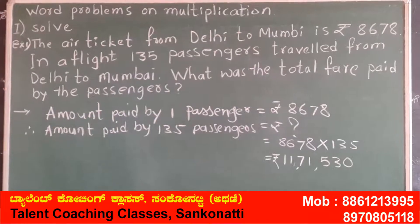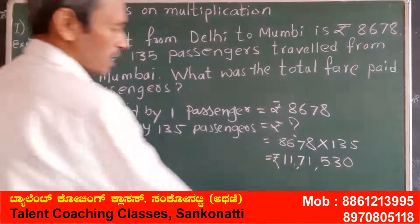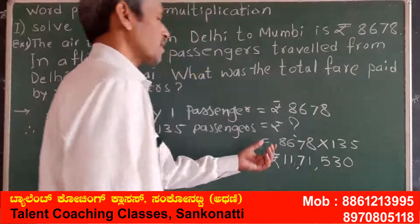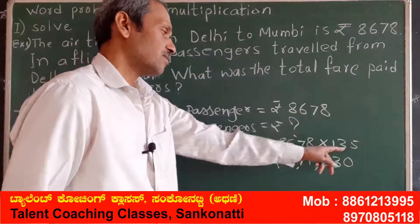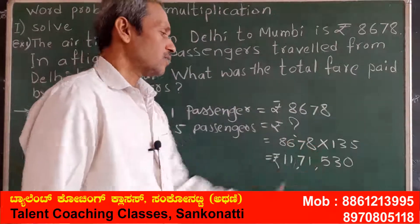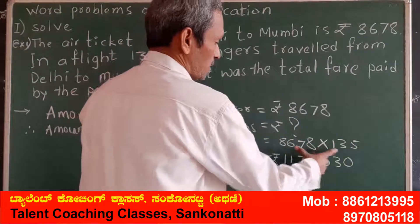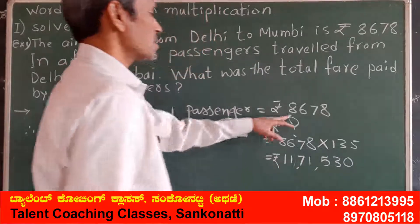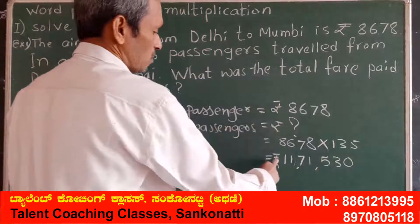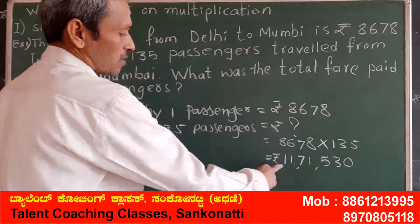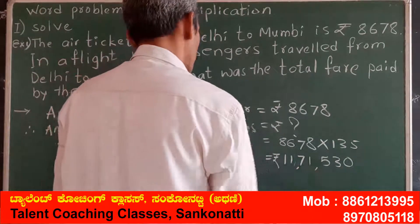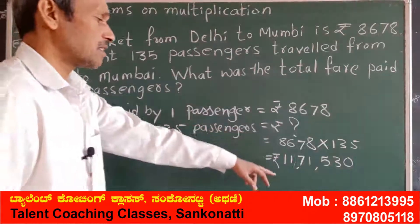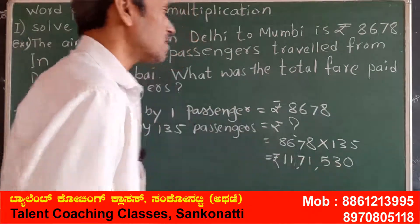We will get Rs.8678 into 135. If you multiply this, you will get Rs.11,71,530. You should work out these in rough paper and then write this one. The product of these two numbers — that is the fare in rupees — so you have to write the rupees symbol before writing this product. Therefore, the amount paid by 135 passengers is Rs.11,71,530.